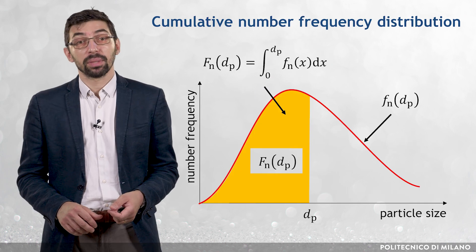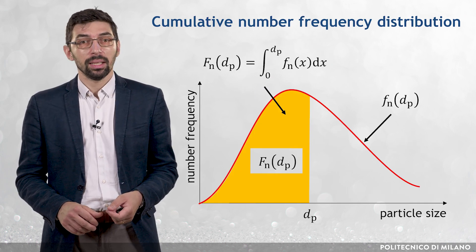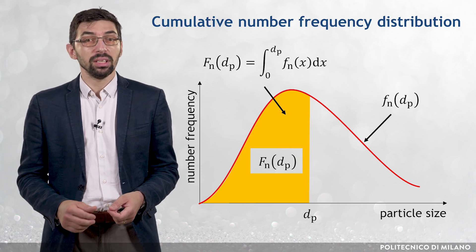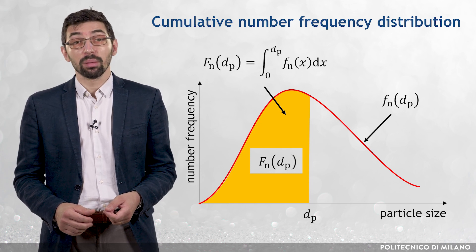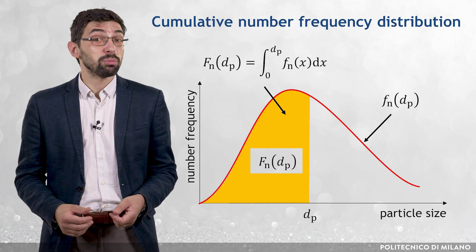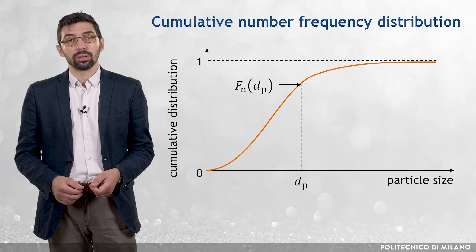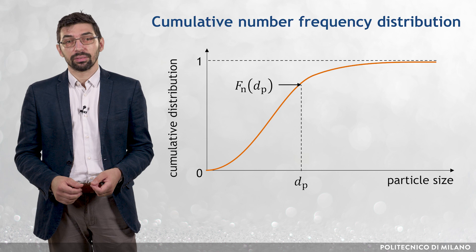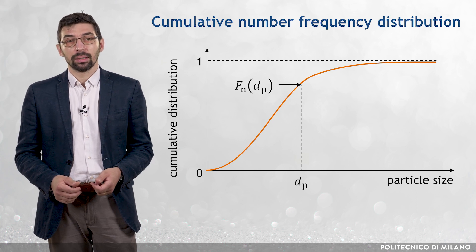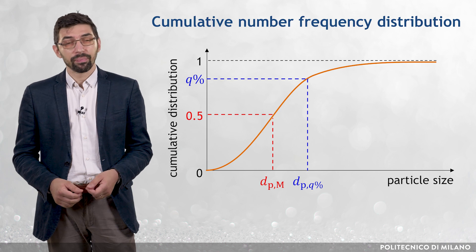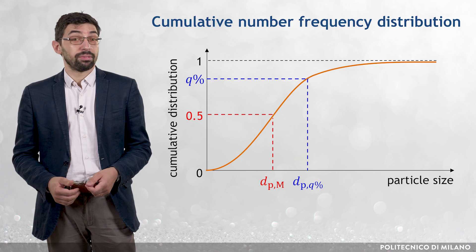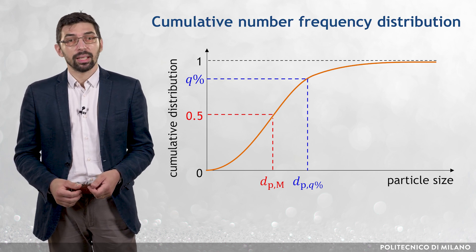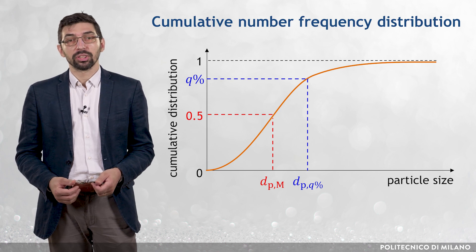The cumulative number distribution function, capital F_n(dP), is the integral from zero to dP of the continuous number frequency distribution, and it represents the probability that an individual particle has a size lower than or equal to dP. From the cumulative distribution, which is monotonically increasing from zero to one, the median number diameter dP_M can be obtained — this is the value of dP for which the cumulative distribution is 0.5. Similarly, one can define dP_q as the particle diameter corresponding to a cumulative distribution equal to Q percent.